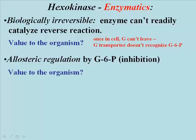How is allosteric inhibition of hexokinase by glucose 6-phosphate useful to a cell or organism? When glucose is plentiful, say right after a meal, it gets into cells and the cells build up high concentrations of glucose 6-phosphate, which then inhibit its own synthesis. Thus the cells get the glucose they need, leaving the rest to circulate and be shared with other cells and tissues.